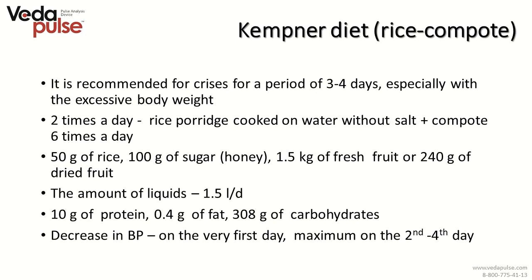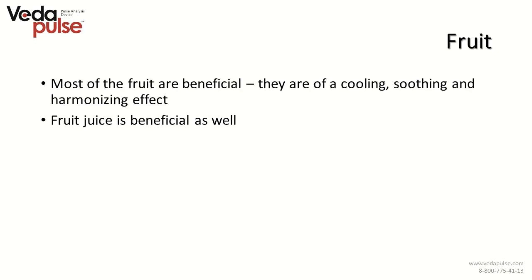The Kempner diet was developed for treatment of hypertension, recommended for crisis periods and used for 3 to 4 days especially in case of excessive body weight. One should eat rice porridge cooked in water without salt twice a day plus compote six times a day, with 50 grams of rice, 400 grams of sugar or honey, and 1.5 kilos of fresh fruit or 240 grams of dried fruit. Daily norm: protein 10 grams, fats 0.4 grams, carbohydrates 308 grams. It helps decrease blood pressure from the very first day, with maximum effect on the second or fourth day.